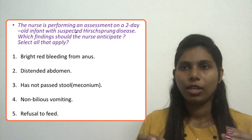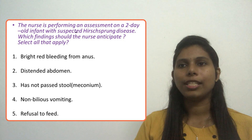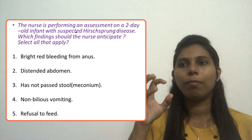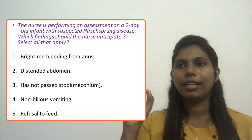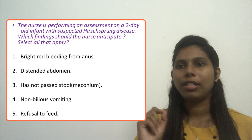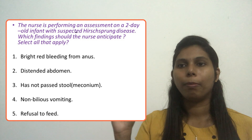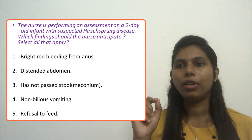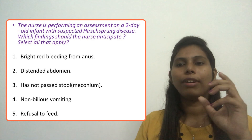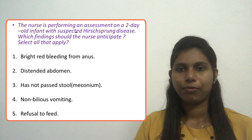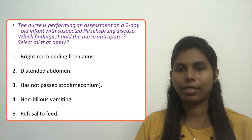Now we will read the options. Option one: bright red bleeding from the anus. Option two: distended abdomen. Option three: has not passed stool or meconium. Option four: non-bilious vomiting. Option five: refusal to feed.